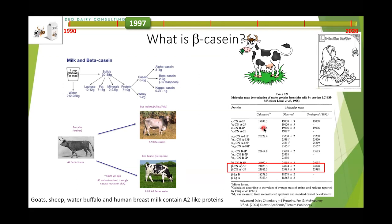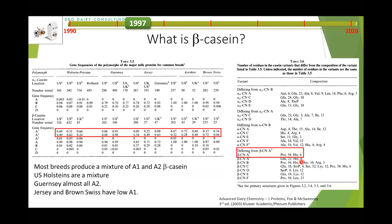On this table, we can see the molecular mass doesn't vary much between the A1 and the A2 genetic variants, because there's only one amino acid difference. But that one amino acid difference may be causing a lot of problems — we shall see.